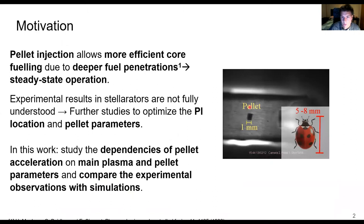Pellet injection is the introduction of very tiny bullets of cryogenic hydrogen into the plasma and is currently the leading technique for core fueling due to deeper fuel penetrations, which are critical for steady-state operation in a fusion reactor. However, experimental results in stellarators are not fully understood yet and therefore further studies are required to optimize the pellet injector location and the pellet parameters.